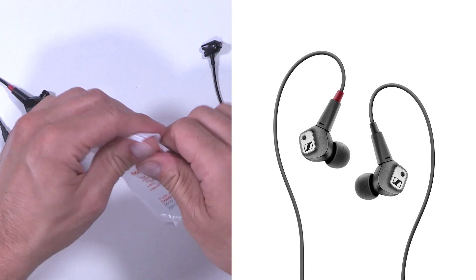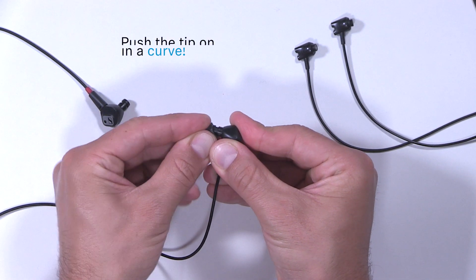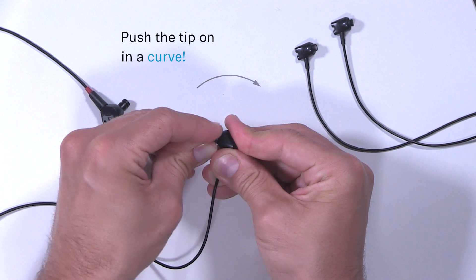First the IE80S. To put on the Comply Foam Tips, it's recommendable to start angled and sort of push the tip on in a curve.